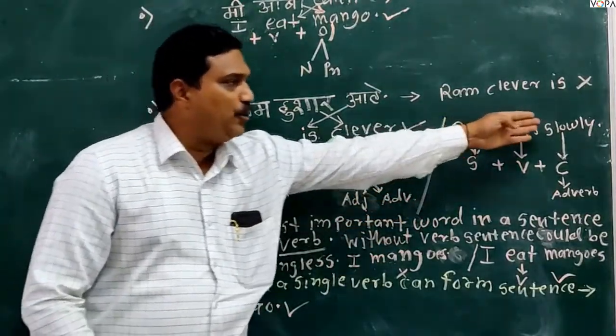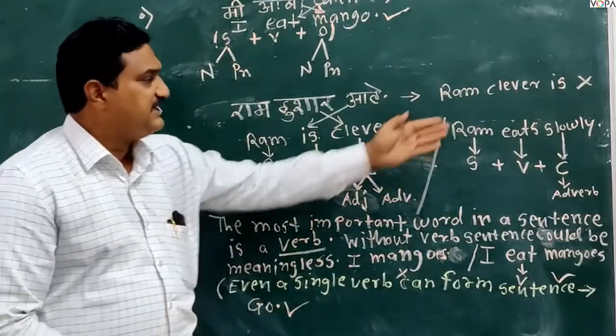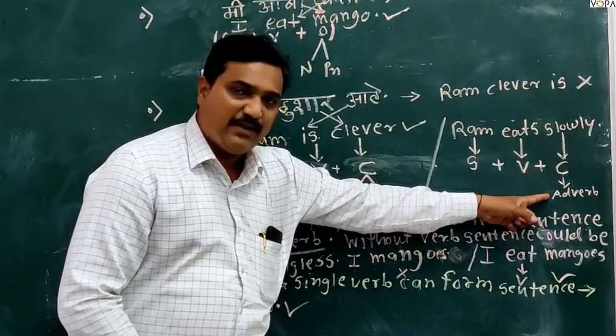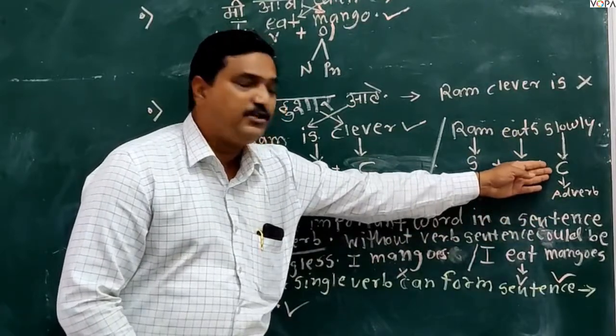Look at Ram is slowly. In this sentence, Ram is subject, is is word, and slowly in the sentence it is adverb. So here adverb is playing the role of compliment.